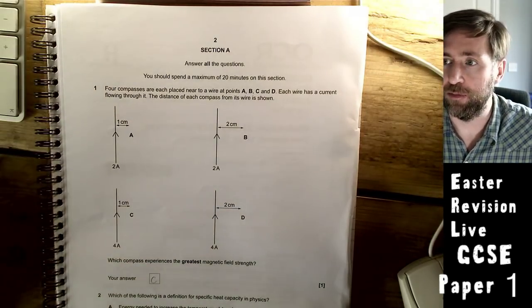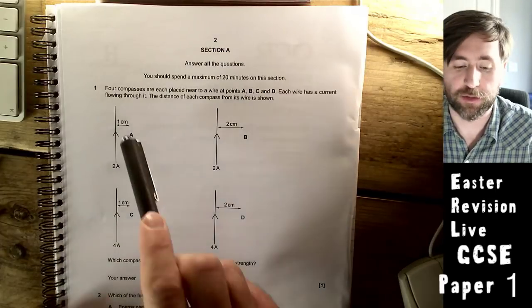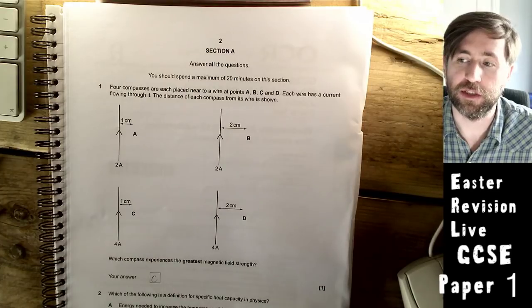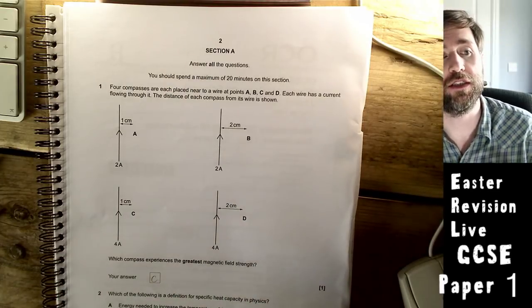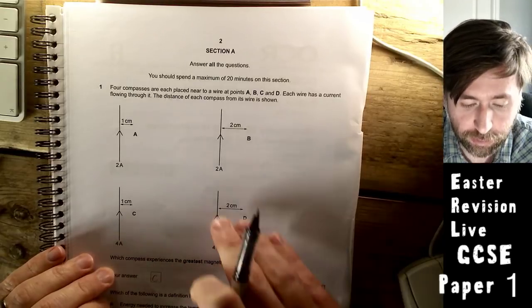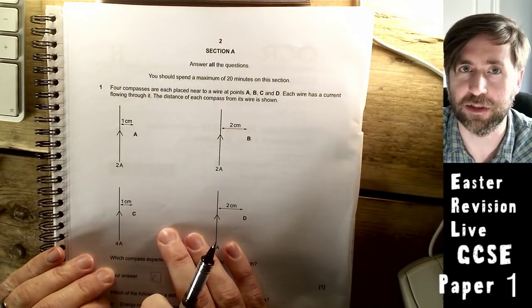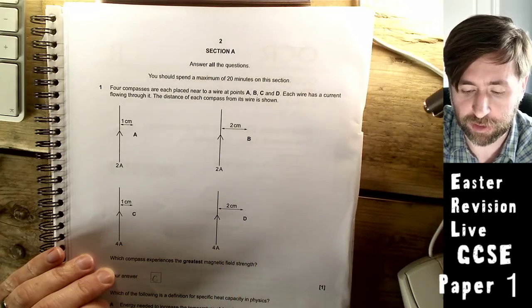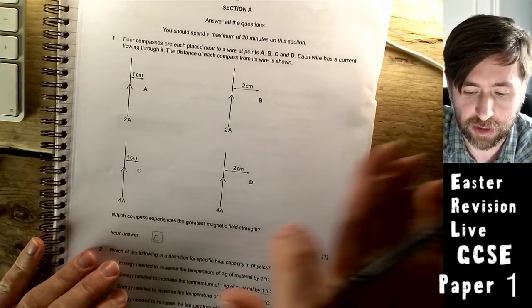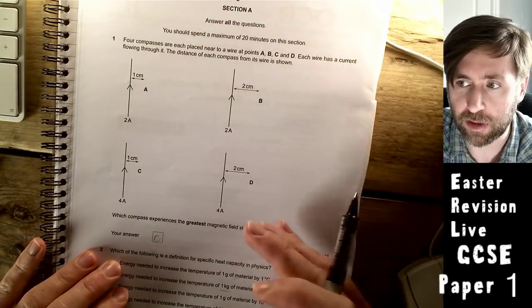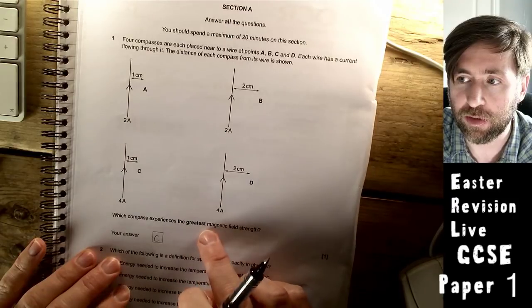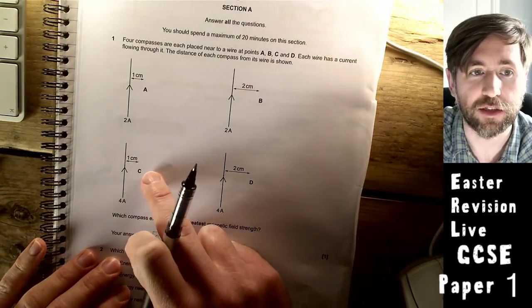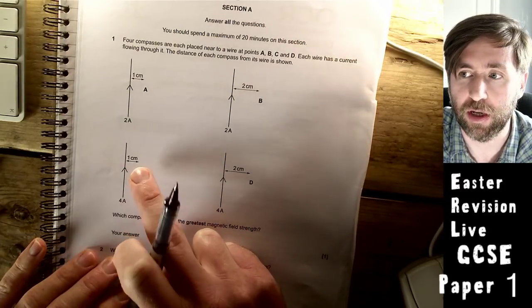Here's the first one. You've got to imagine some compasses around a current carrying wire. Which compass experiences the greatest magnetic field strength? I would always read the question before I read the stem. The greatest magnetic field strength is going to be around the one with the biggest current, so it's definitely going to be one of these two, and it's going to be strongest closest to the wire. So it's this one, it's C.